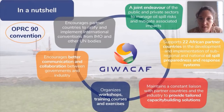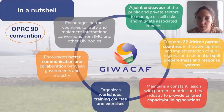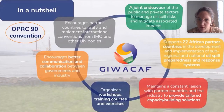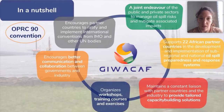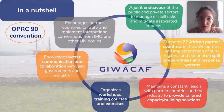The JIWAKA project is a joint endeavor of the public and private sectors to manage oil spill risk and mitigate associated impacts. It supports 22 African partner countries in the development and implementation of sub-regional and national oil spill preparedness and response systems. It maintains constant liaison with partner countries and industry to provide tailored capacity-building solutions, organizes workshops, training courses and exercises, and encourages better communication and collaboration between governments and industry in the framework of the OPRC 90 Convention.